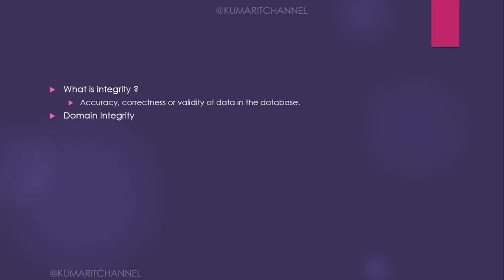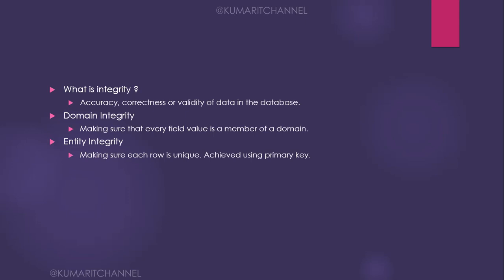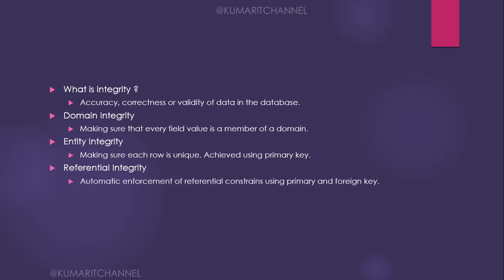The types of integrity in a database management system are: domain integrity — making sure that every field value is a member of a domain; entity integrity — making sure each row is unique, achieved using a primary key; and referential integrity — automatic enforcement of referential constraints using primary and foreign keys.